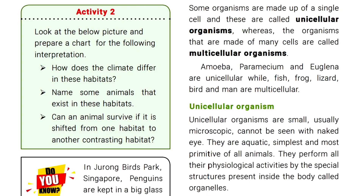Some organisms are made up of single cells and these are called unicellular organisms. Whereas, the organisms that are made up of many cells are called multicellular organisms.